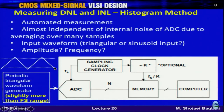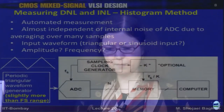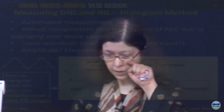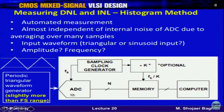With a triangular waveform slightly above full scale, you have overflow hits at the extreme codes. Excluding the first and last codes (2^n - 2 valid codes), the ideal number of hits per code is M_T / (2^n - 2). If the ADC has non-linearity, some codes will have more hits (wider segments) and some will have fewer hits (narrower segments) — these are called wide codes and narrow codes.